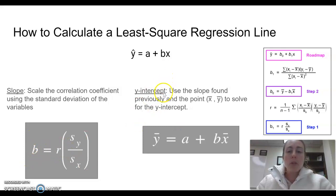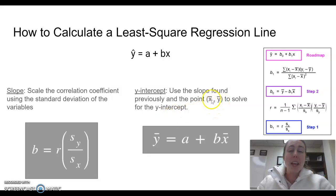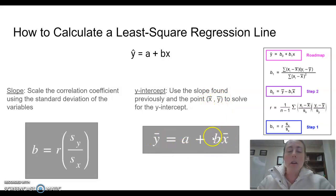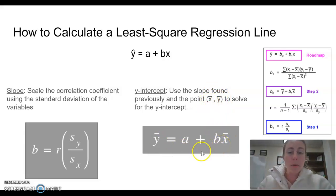Once you have the slope, we use the mean of x and the mean of y to solve for the y-intercept. We plug in the mean of x for x, the mean of y for y, and use our slope b that we just calculated from the correlation and the standard deviations.